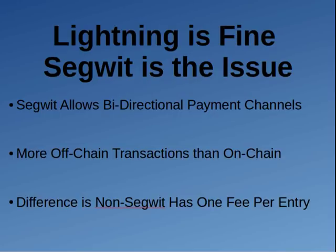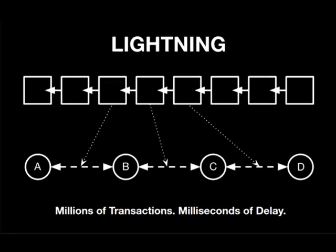With Bitcoin Cash you can use lightning channels — streaming money as open-ended transactions, like a bar tab where you settle once you know how many beers you've bought. There's no problem with that because you only record something on the blockchain once it's closed. Lightning channels are fine. It's SegWit that is the issue, where you can share somebody else's channel for your transaction. That makes the blockchain something else — it no longer represents all the transactions that have ever occurred on the network.